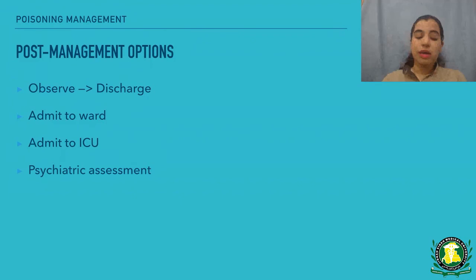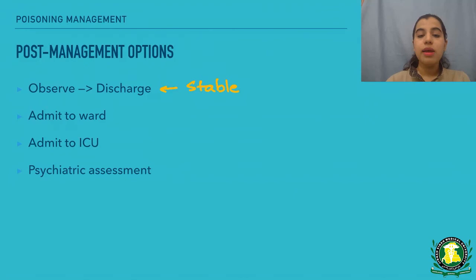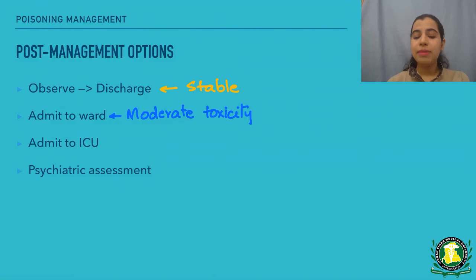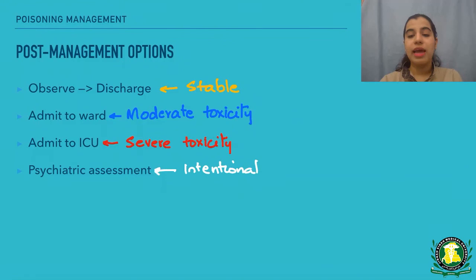After management, you have a few disposition options. If the patient is stable and the drug has minimal toxicity, you can keep them in the ER, observe them for four to six hours, and if they are still fine, send them home. If the patient has moderate toxicity or history or lab data suggests they might deteriorate, admit them to a ward for continued monitoring and treatment. If the patient has severe toxicity, admit them to the ICU. For all these patients, if the overdose was intentional, you also need to get a psychiatric assessment. Even if the patient says it was not intentional and you suspect otherwise, your suspicion alone is enough to warrant a psychiatric assessment before discharge.